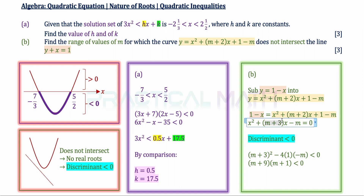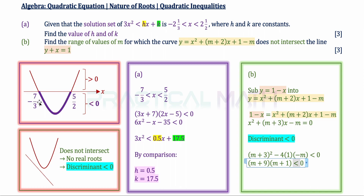Applying the discriminant with b equal to m plus 3, a equal to 1, and c equal to negative m, we set bracket m plus 3 squared minus 4 times 1 times negative m to be less than 0. After simple expansion and refactorization, we obtain bracket m plus 9 bracket m plus 1 less than 0. Since this is less than 0 and gives one range, m lies between the smaller and greater roots: m is in the range negative 9 to negative 1.